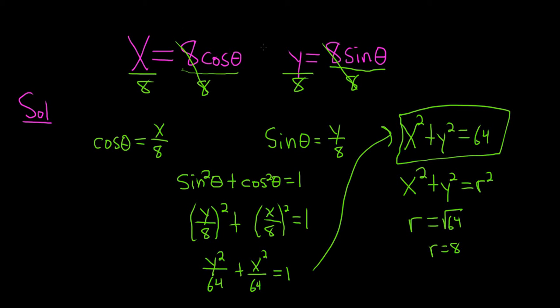So whenever you have x equals a number times cosine and y equals a number times sine, and these numbers are the same, it's always going to be a circle. So if it was a circle of radius 3, it would be 3 cosine theta, 3 sine theta.